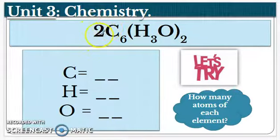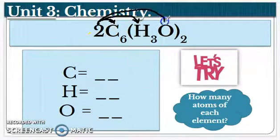So we learned subscripts and coefficients. Here's a big coefficient, number two out front. We learned that it is going to rainbow to every single element that comes after it. So the two is going to affect the carbon, the hydrogen, and also the oxygen. We want to do that first.